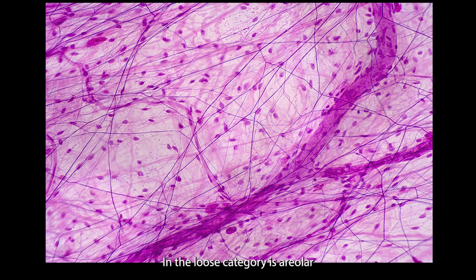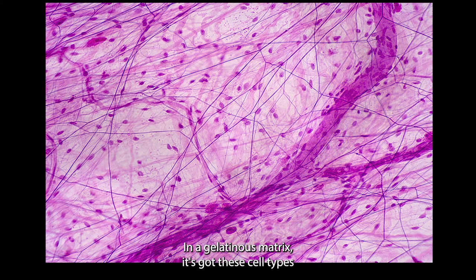Let me tell you about connective tissue properties. We've got three categories: connective tissue proper - loose and dense. In the loose category is areolar: collagen, elastic, and reticular fibers in a gelatinous matrix. It's got these cell types: